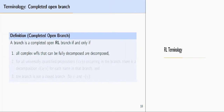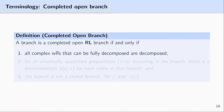In this video I'm going to talk about the revision to the notion of a completed open branch in the language of predicate logic. A branch is considered a completed open branch in predicate logic if and only if it meets three conditions.